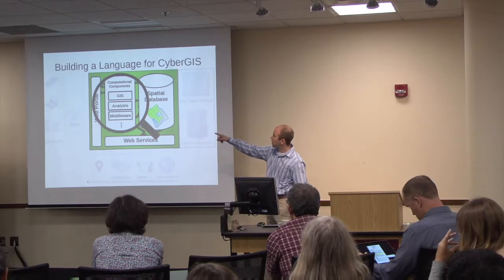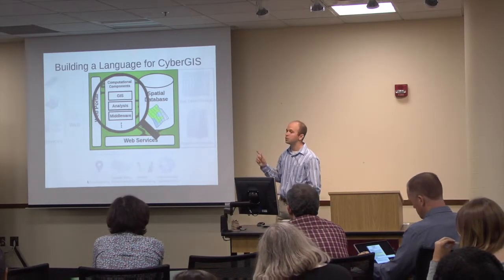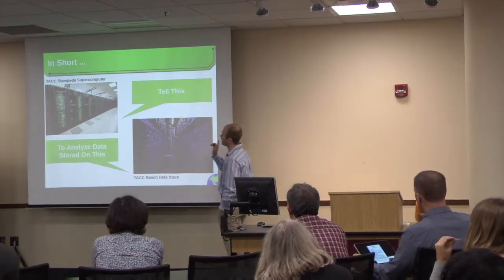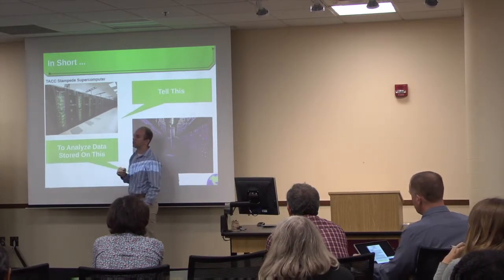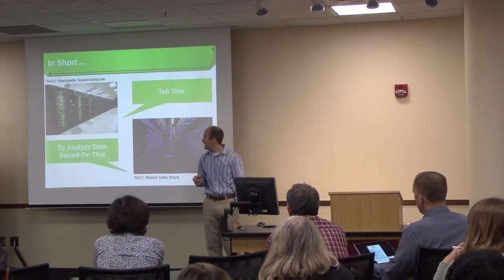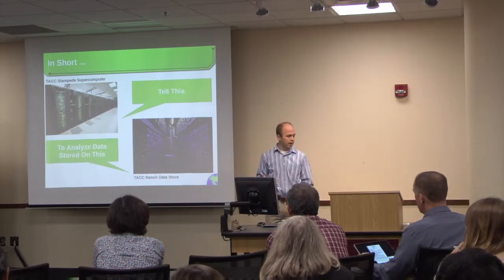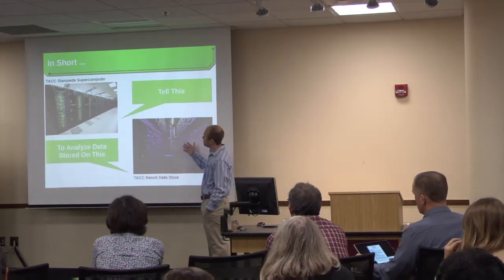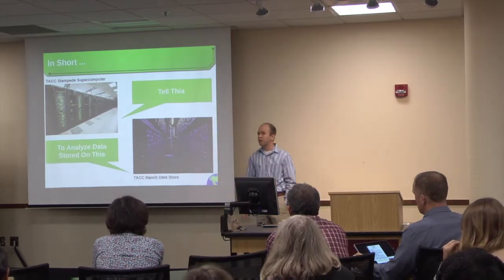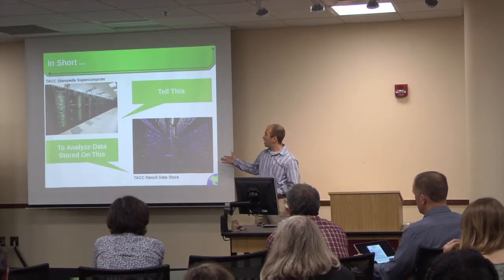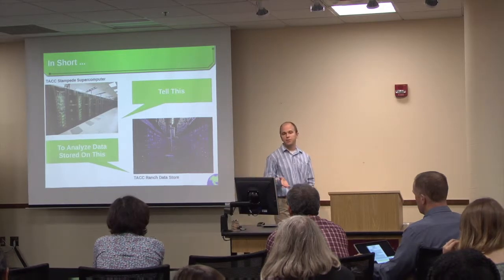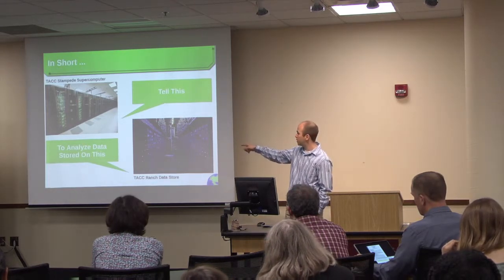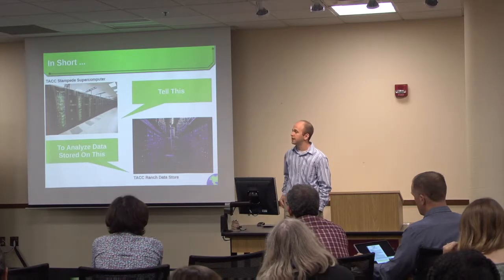I want to focus most of this talk on the computational components — how can we actually make use of these supercomputers to look at geospatial data? This is a supercomputer at the Texas Advanced Computing Center called Stampede. It has a few hundred thousand processing cores, whereas the desktop computer this presentation is running on probably has two or four. We wanted to be able to analyze data stored on the TAC Ranch Data Storage, which stores petabytes and petabytes of data. The core of what I'm trying to do is make this easy — to leverage all those processing cores to chug through that data.